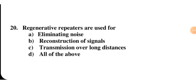Regenerative repeaters are generally used when we transmit data over long distances. In channels, regenerative repeaters eliminate noise, reconstruct the signal, and enable transmission over long distances — all of the above. So D is the right option for this question.